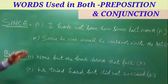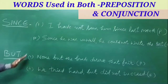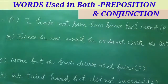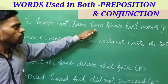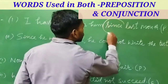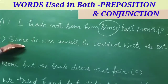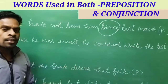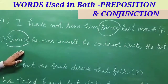The words 'since' and 'but' are also used for both prepositions and conjunctions. First example: 'I have not seen him since last month.' Here 'since' is used as a preposition. Second example: 'Since he was unwell, he could not write the test.' Here 'since' is used as a conjunction.